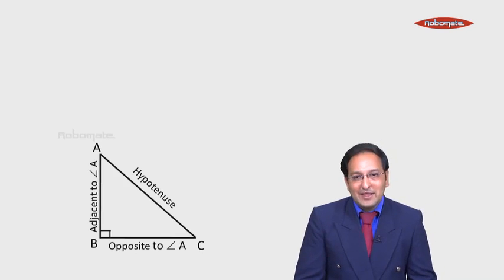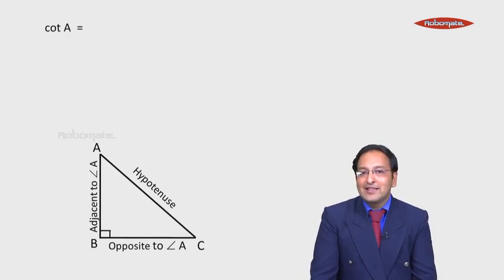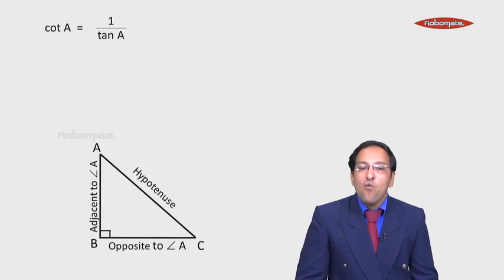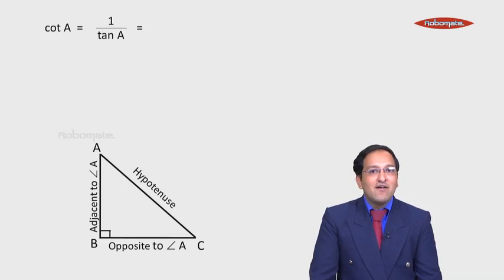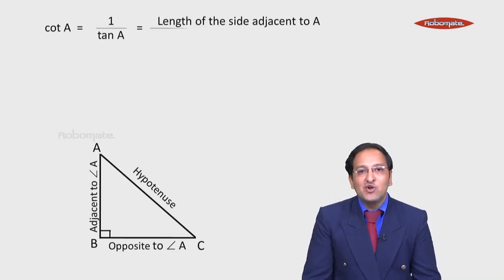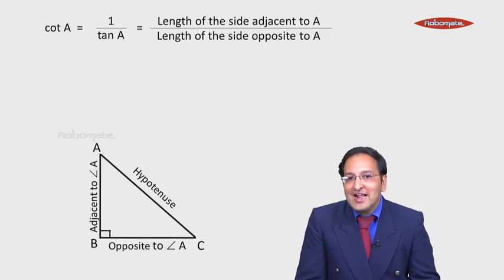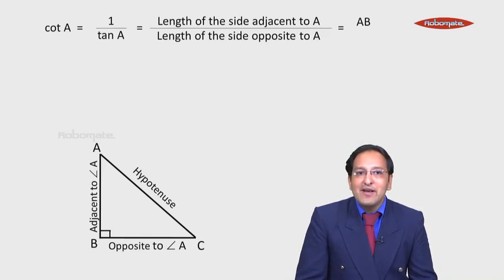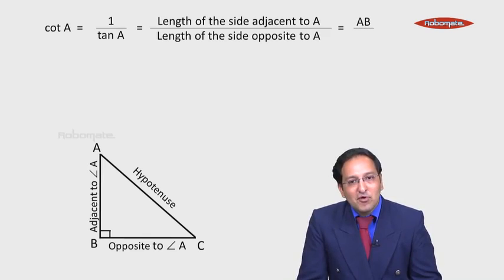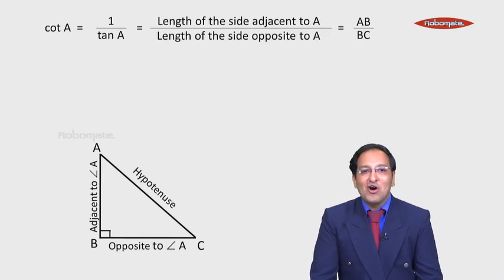Let's move to the next slide. The right-angle triangle remains the same. The next ratio is cot A. Cot A is equal to 1 upon tan A, which is the length of the side adjacent to A divided by the length of the side opposite to A. The adjacent side is AB and the opposite side is BC, so cot A equals AB upon BC.